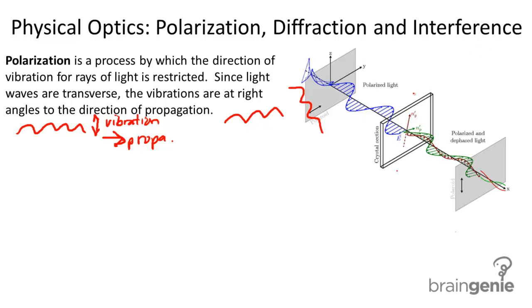For example, here we have a crystal section. Crystals are formed, they have different axes. They have different crystal-axis structures. Because of the arrangement of the molecules in a crystal, they only allow certain directions of vibration to pass through.